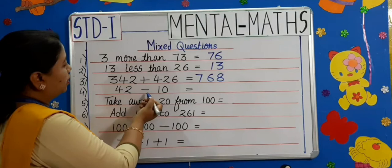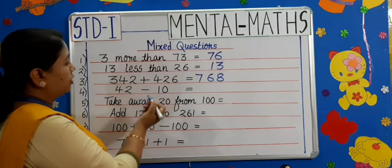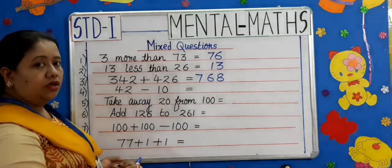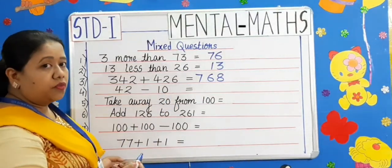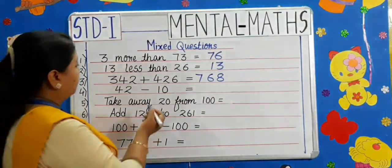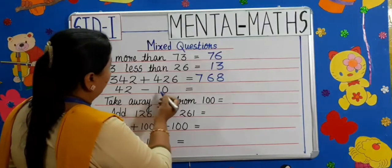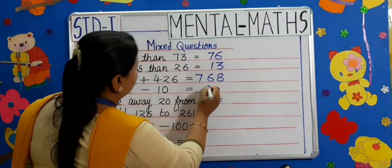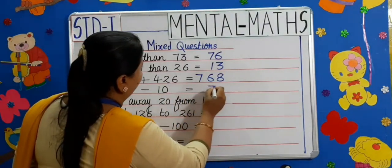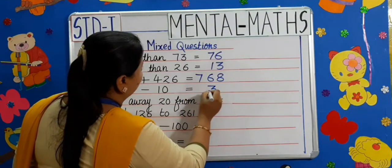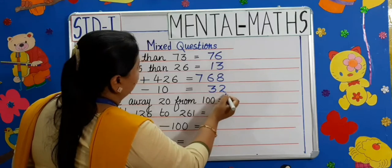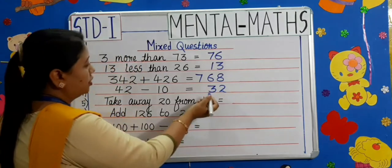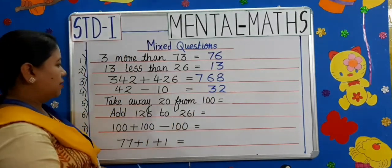Moving on to the fourth one: 42 minus 10. Here we are going to do subtraction. 42 minus 10 is 32. That's 2 ones and 3 tens.